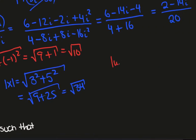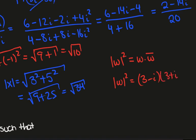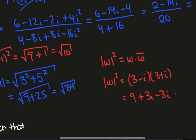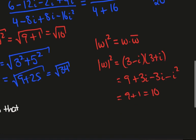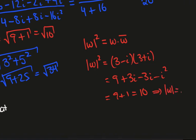Another way to calculate the modulus is to use the fact that the square of the modulus equals w times w-bar. So we compute 3 minus i times 3 plus i, giving 9 plus 3i minus 3i minus i squared. The 3i's cancel and minus i squared is plus 1, so we get 10. Since that's the square of the modulus, the modulus is the square root of 10.